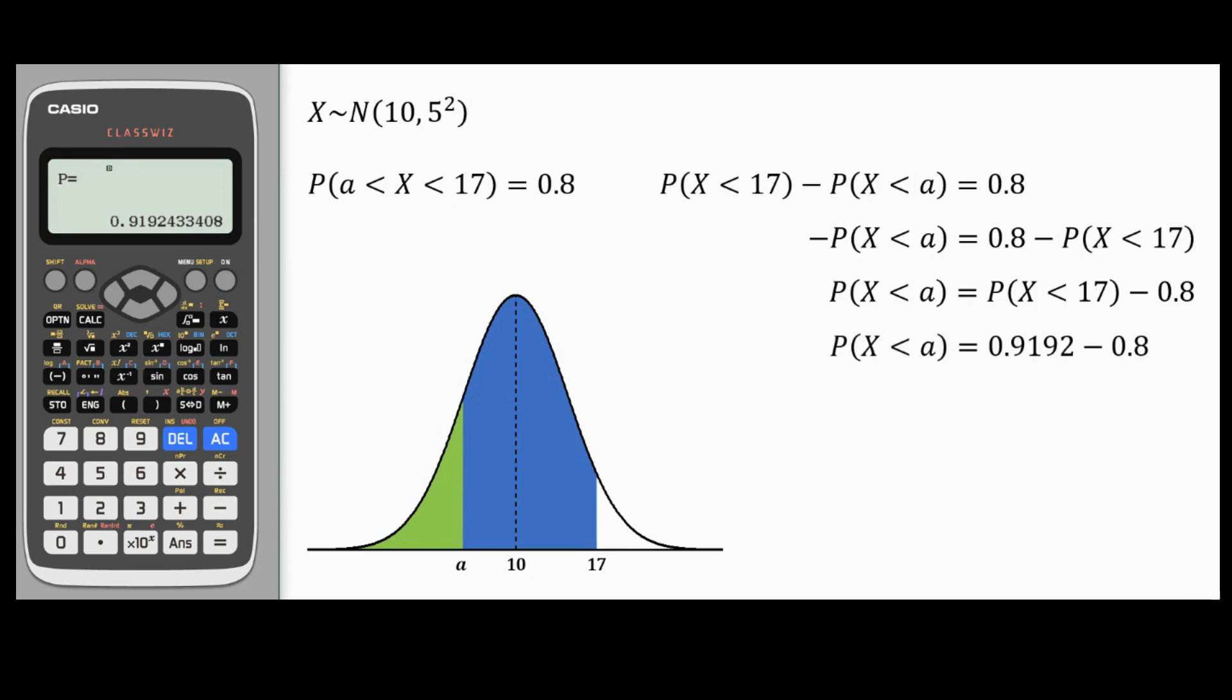I found this one, I can just say probability X less than A is that result. Hence, if I go to menu 7 which is distribution inverse normal, in place of area, I'll just select alpha minus 0.8 equals. The calculator performed this calculation at full accuracy. Pressing the equal sign will give me my answer which is 4.11 correct to three significant figures.